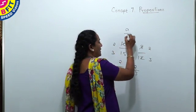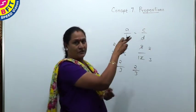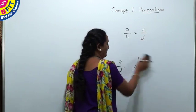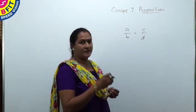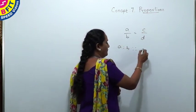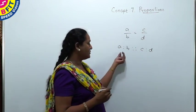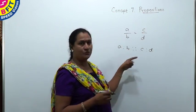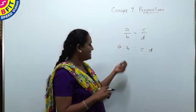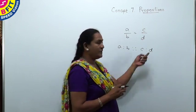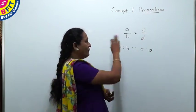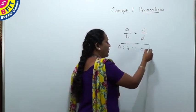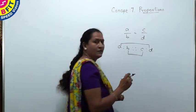When A/B = C/D, these two ratios are equivalent and they are said to be in proportion. This is written as A:B::C:D, which is read as 'A is to B as C is to D.' Here A is the first proportion, B is the second proportion, C is the third proportion, and D is the fourth proportion. When two ratios are equivalent, they are written in this format.